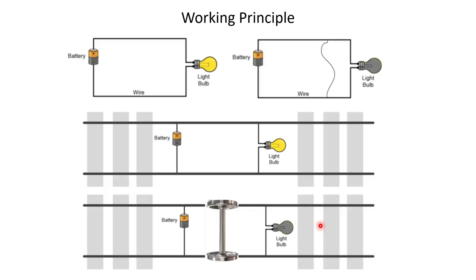Now we'll try to understand the same circuit in the context of track circuits. The first difference you note is that instead of wires, we have tracks. And the second difference is that instead of the wire you use to short the circuit, we have axles. So it's basically the same circuit — the only difference is that instead of wire you have tracks, and instead of that cable you have the axle.